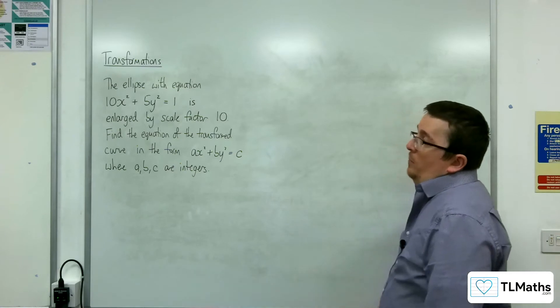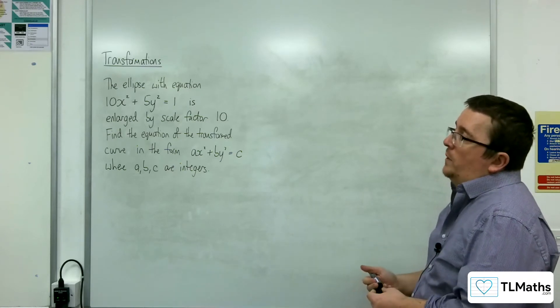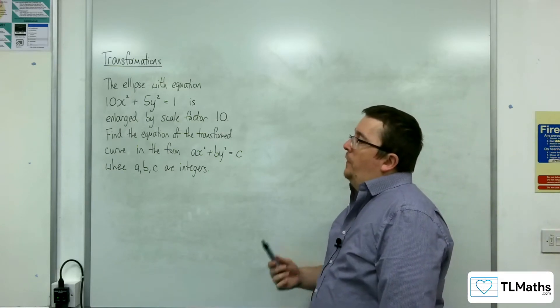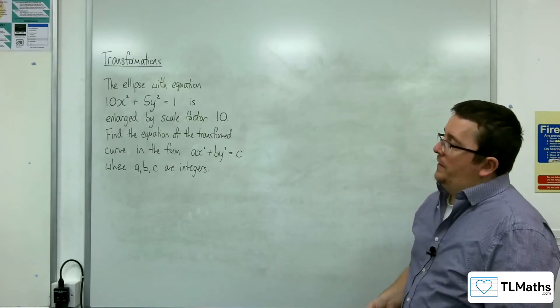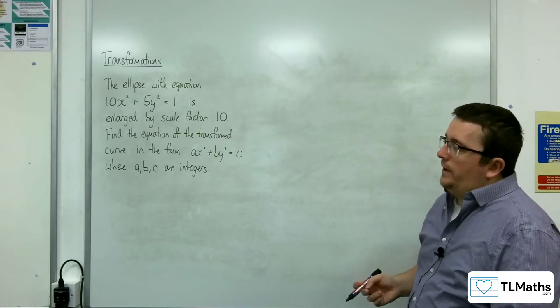In this video we're going to be looking at the problem here where we've got the ellipse with equation 10x squared plus 5y squared equals 1 being enlarged by scale factor 10. Find the equation of the transformed curve in the form ax squared plus by squared equals c where a, b and c are integers.